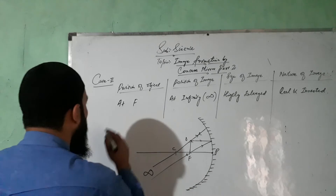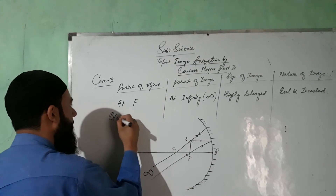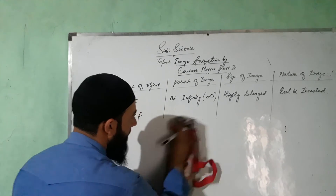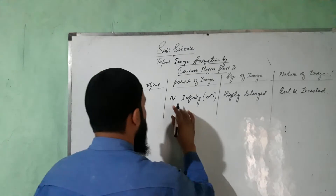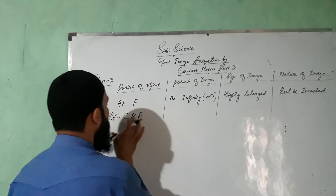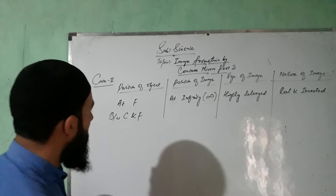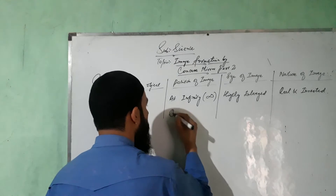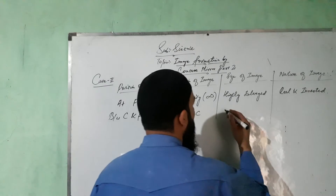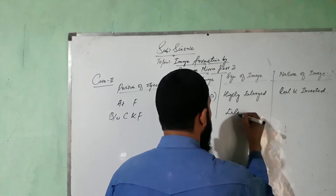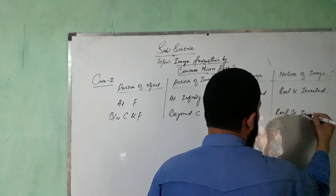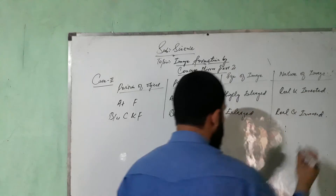If the object is between C and F, the image will be enlarged, real and inverted. Let's see the ray diagram for this case.